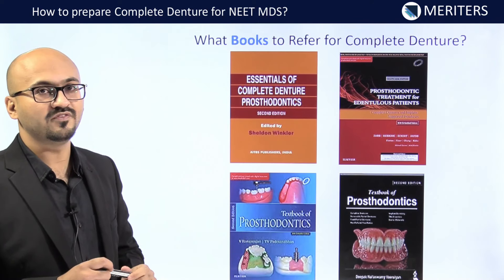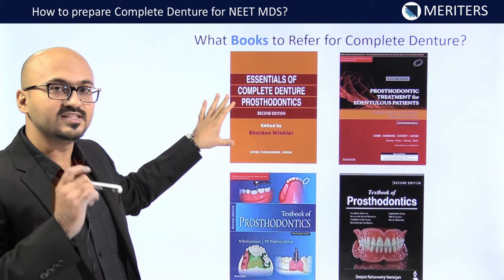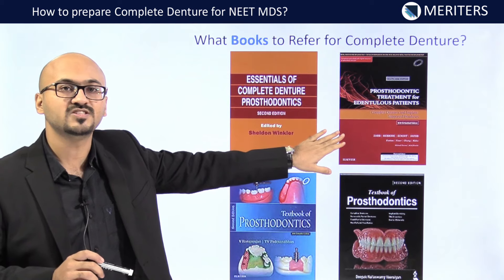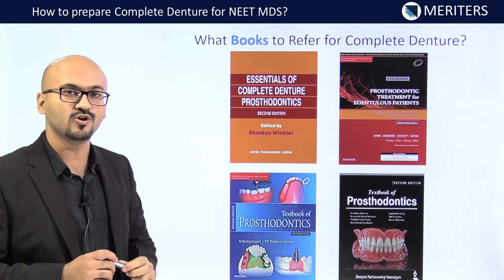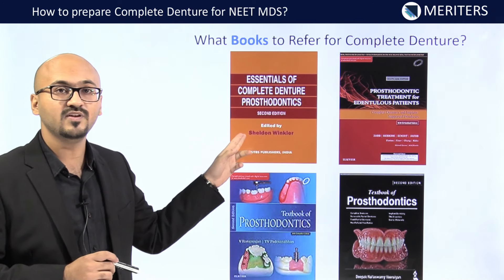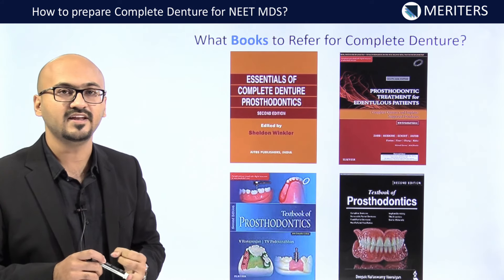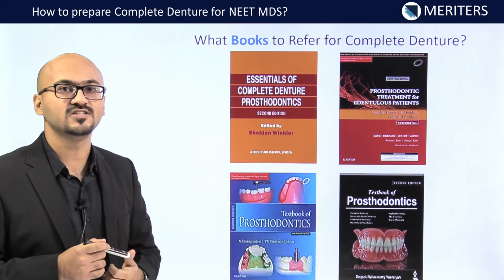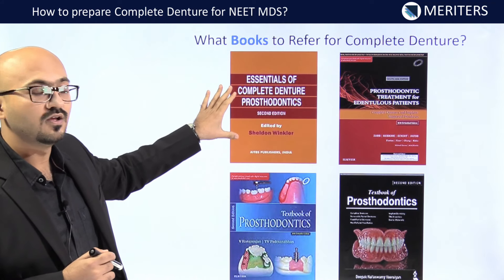For complete denture preparation, refer Sheldon Winkler second edition, and Zarb and Bolender's 'Prosthodontic Treatment for Edentulous Patients.' Rangarajan and Nallaswamy are Indian authors and also very standard. Winkler covers anatomical landmarks, posterior palatal seal area, articulators, and miscellaneous topics like relining, rebasing, immediate dentures, single complete dentures, and combination syndrome.